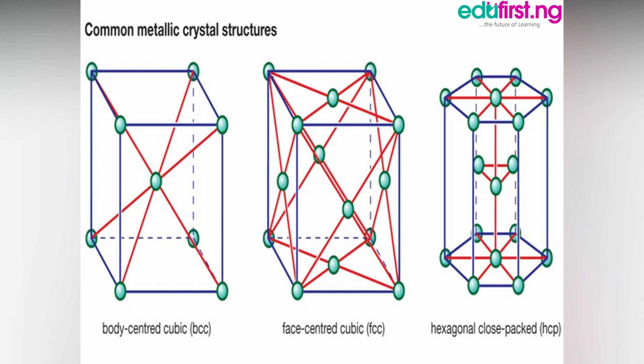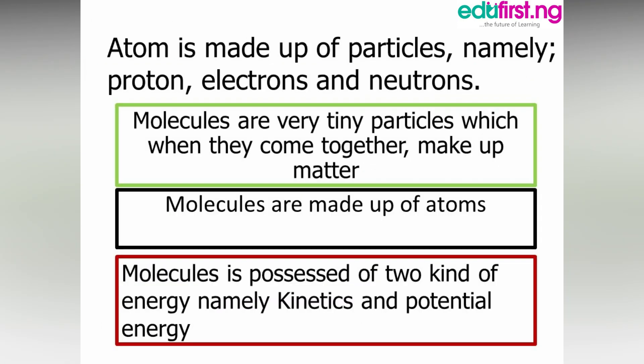There is a need for us to differentiate between atom and molecule. An atom is made up of particles, and those particles include the proton, electron, and neutron. Molecules are very tiny particles which, when they come together, make up matter. Molecules are made up of atoms. So atoms are combinations of protons, electrons, and neutrons; a molecule is a combination of atoms; and matter is just combinations of molecules coming together.